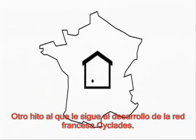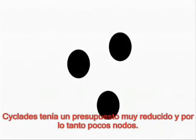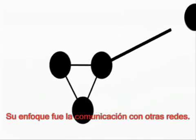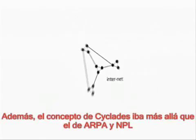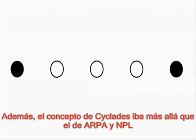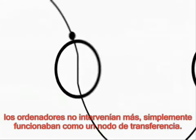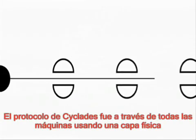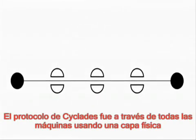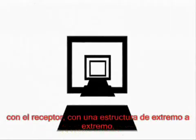Another milestone followed with the development of the French network Cyclades. Since Cyclades had a far smaller budget than ARPANET, and thus also fewer nodes, the focus was laid on the communication with other networks. In this way, the term Internet was born. Moreover, Cyclades' concept went further than ARPANET and the NPL. During communication between sender and receiver, the computers were not to intervene anymore, but simply serve as a transfer node. Cyclades' protocol went through all machines using a physical layer implemented into the hardware, providing a direct connection with the receiver — an end-to-end structure.